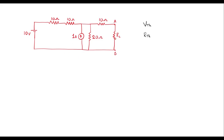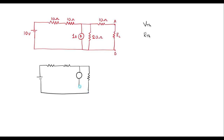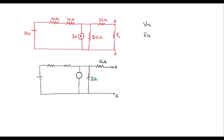First, let me remove the load resistor which is connected at terminal A and B. I can represent this circuit as: here we have a current source of 1 amp, here we have a 20 ohm resistor. Now I've made it open. The value of this is 10 ohm, this is 20 ohm, this is the 1 amp current source. Here we have 10 ohm, 10 ohm, and this is the 10 volt DC source.